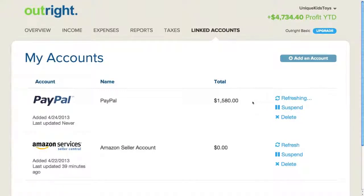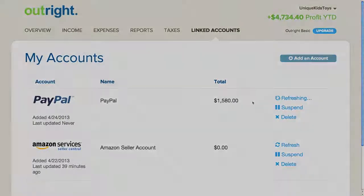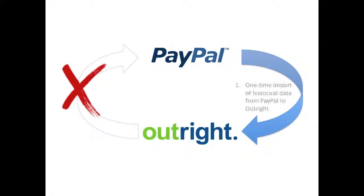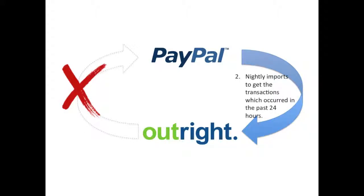The amount of time this takes depends on the amount of data I have in PayPal. In the background, Outright is creating a read-only connection to my PayPal account and importing my transaction data. A read-only connection means that data flows one way — from PayPal into Outright. With a read-only connection, Outright will never have the ability to write, modify, or delete data in my PayPal account. The importing of data happens in two steps. When I first link my account, there is a one-time import of my historical transactions from PayPal into Outright. Thereafter, there is a daily import to get the latest transactions which occurred in the last 24 hours. This ensures that I have a timely view of my finances in Outright.